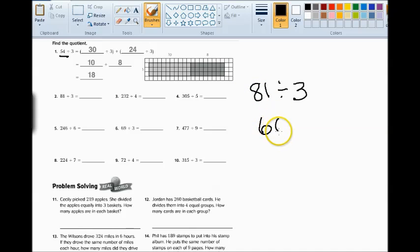So if I break apart 81 into a multiple of 3 that I know, which is 60, plus what adds with 60 to make 81, and I can see that is 21, because 60 plus 21 is 81.